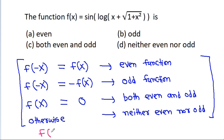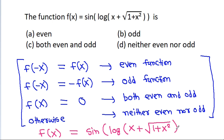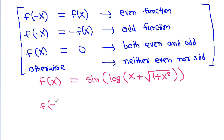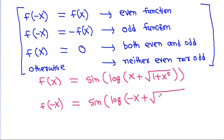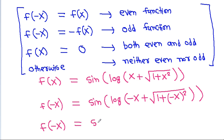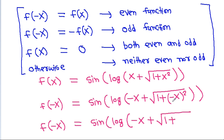We have f(x) is equal to sin of log of x plus square root of 1 plus x square. So f(-x) will be equal to sin of log of minus x plus square root of 1 plus x square.